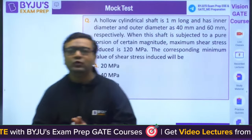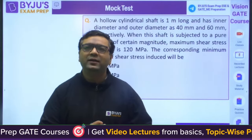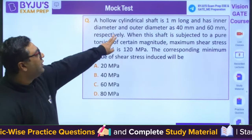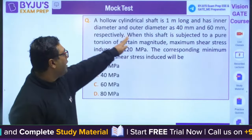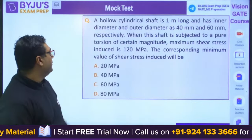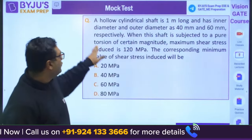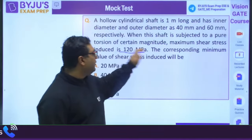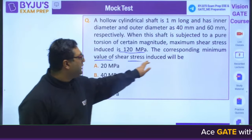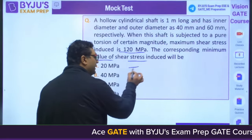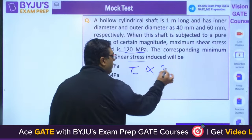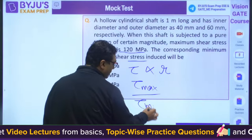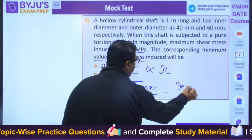The very first question is from strength of material. A hollow cylindrical shaft is 1 meter long, has inner diameter 40 mm and outer diameter 60 mm. When this shaft is subjected to pure torsion, the maximum shear stress induced is 120 MPa. The corresponding minimum value of shear stress will be? Since Tau is directly proportional to R, Tau max by Tau min equals R max by R min, which is 30 by 20.